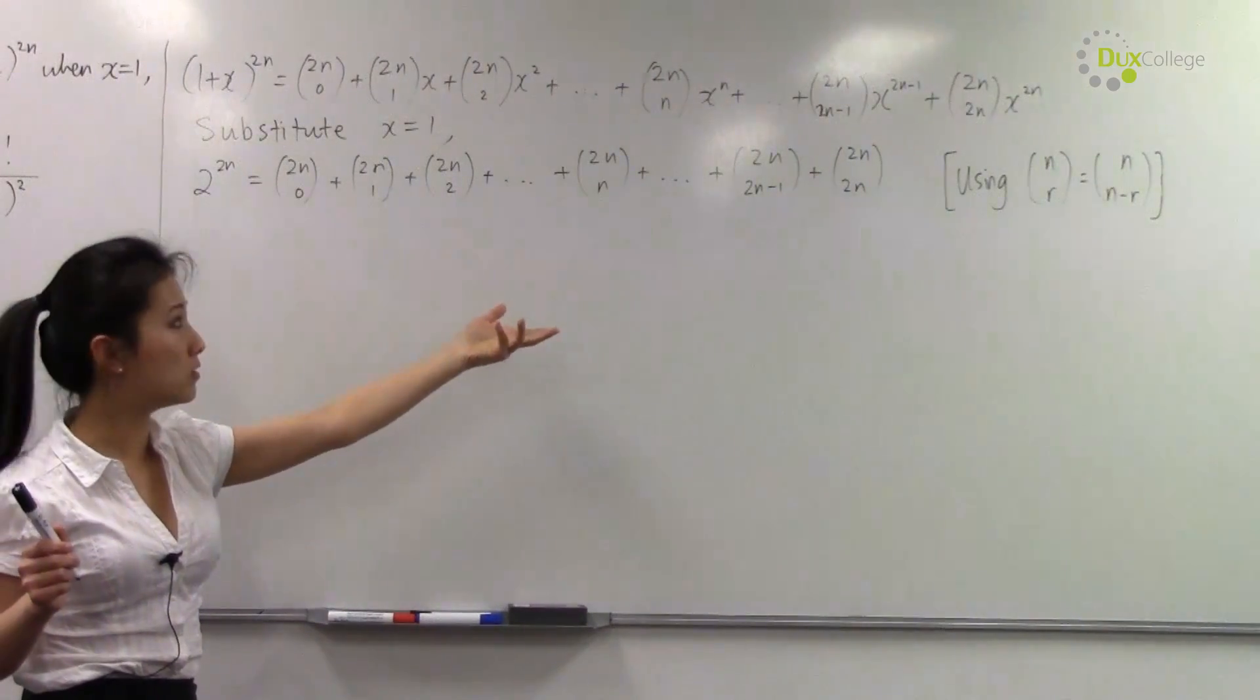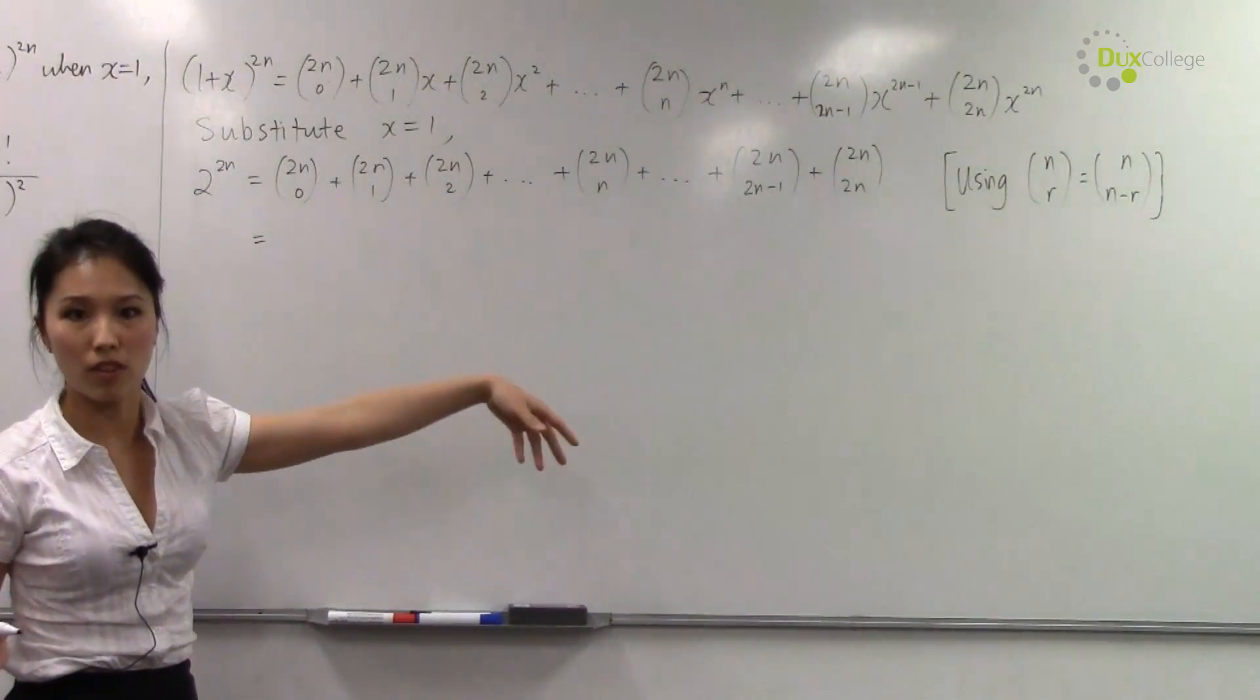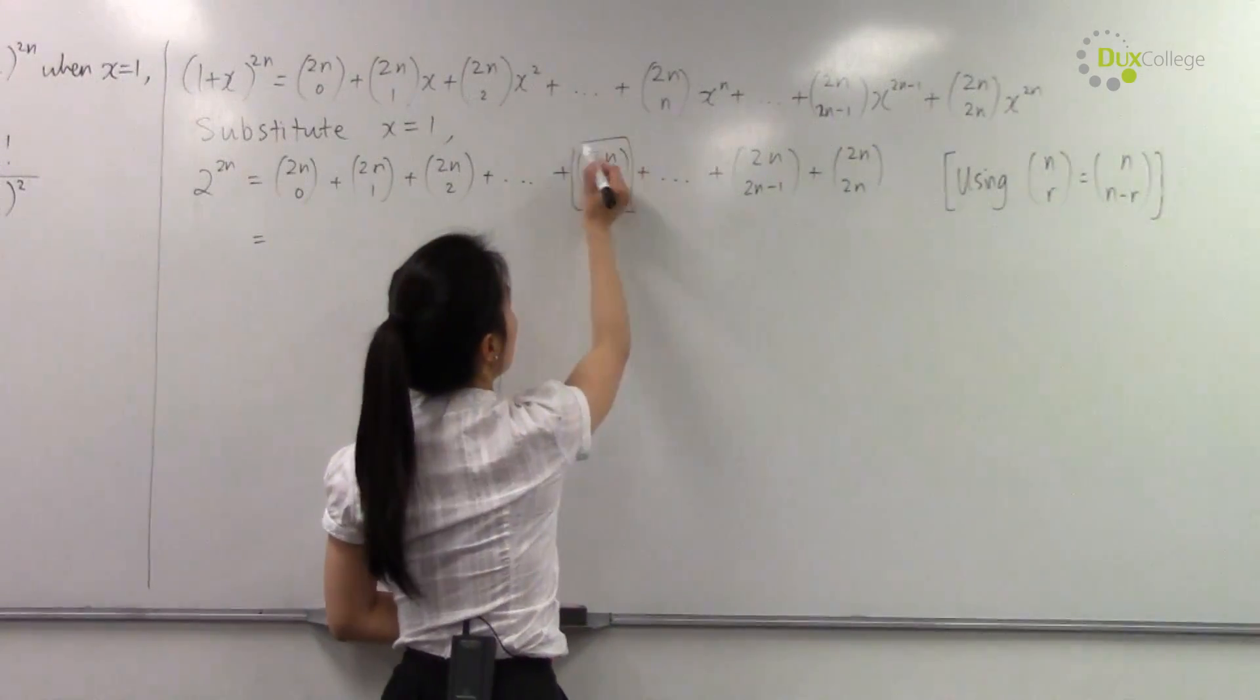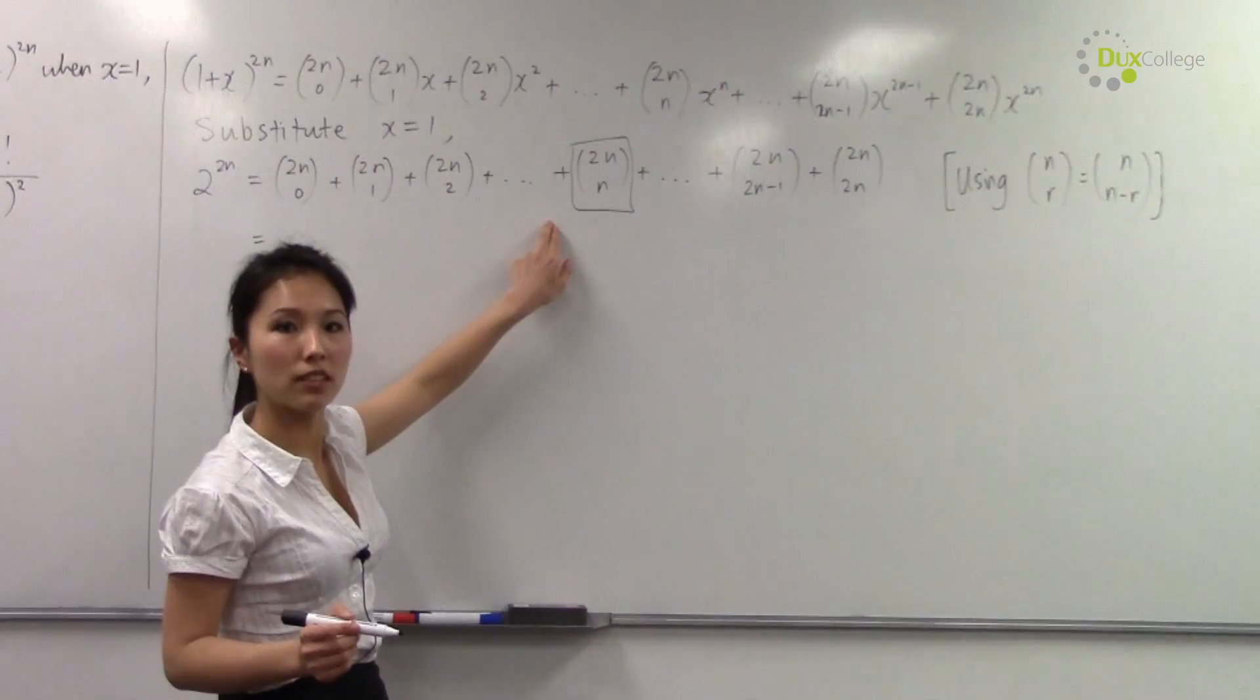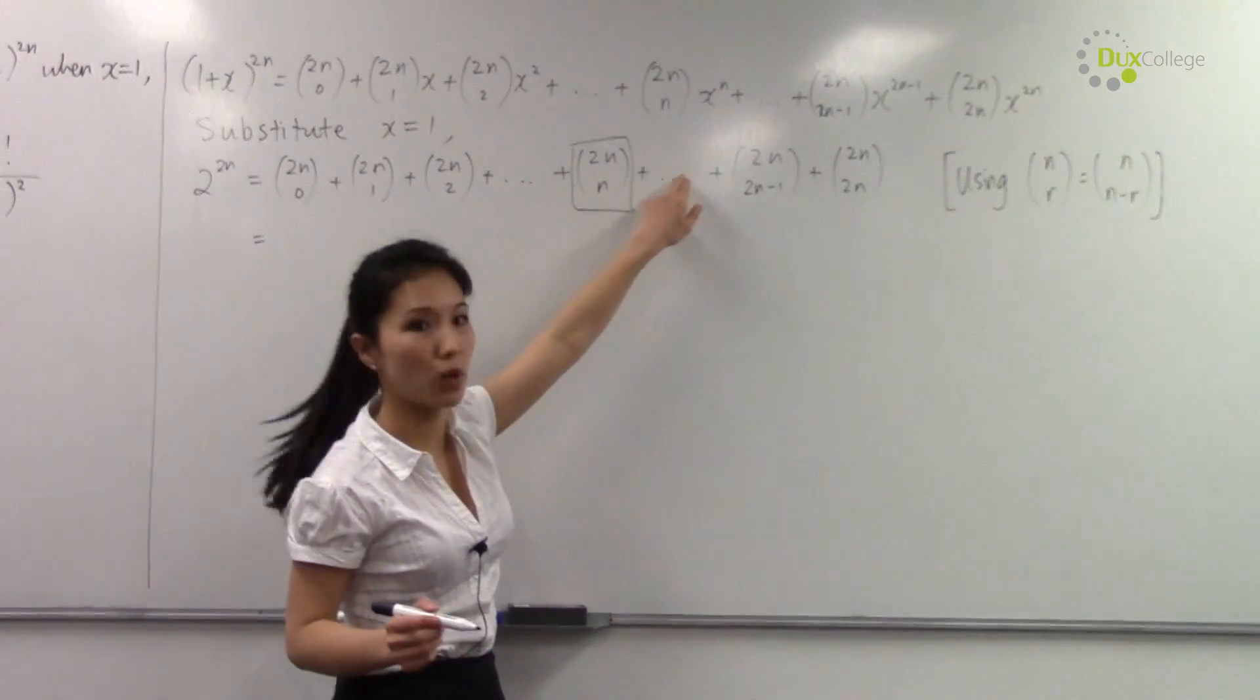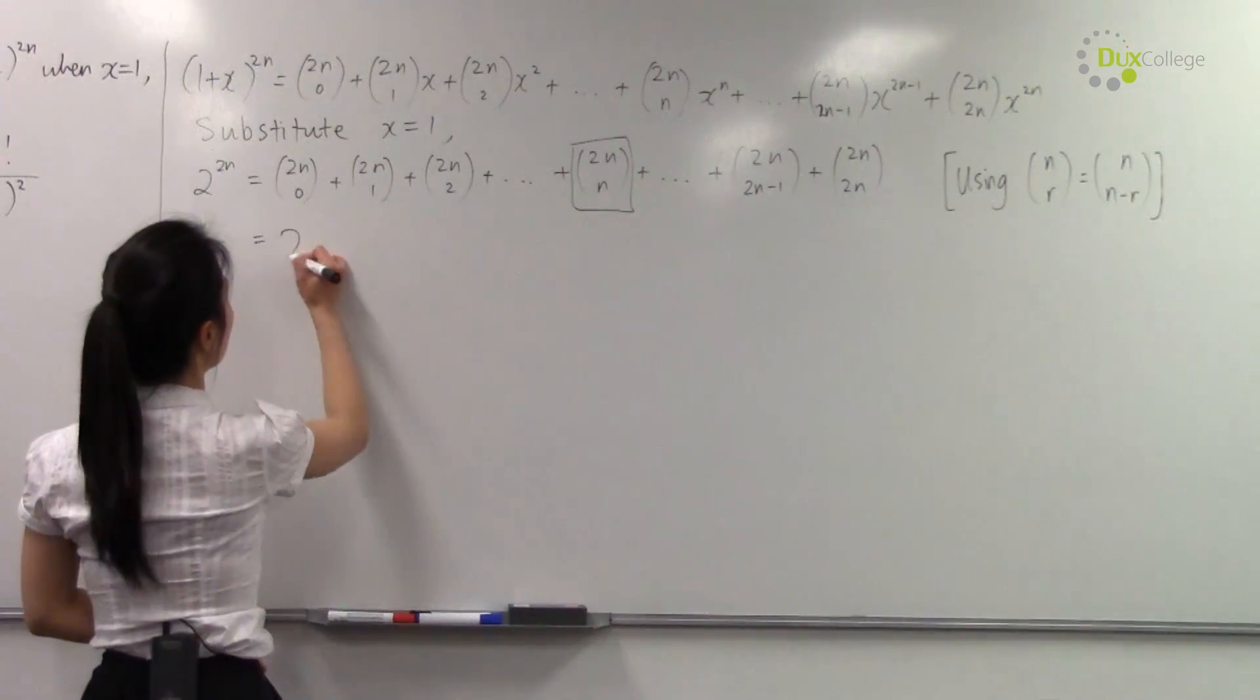Which means we have two lots of everything except this middle term here, because this is the term that's exactly in the middle. And the previous term, which is 2n choose (n-1), equals the one on the right of this term, 2n choose (n+1).